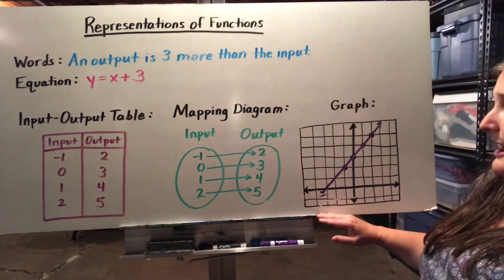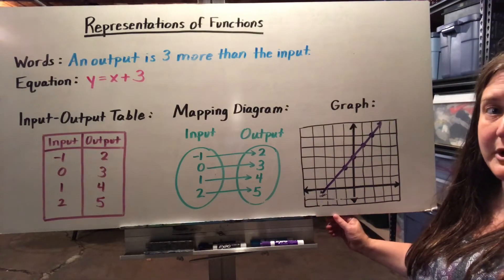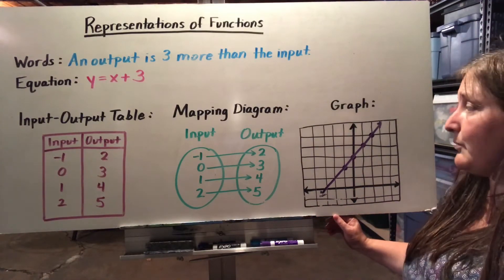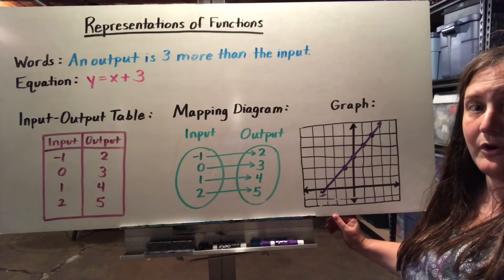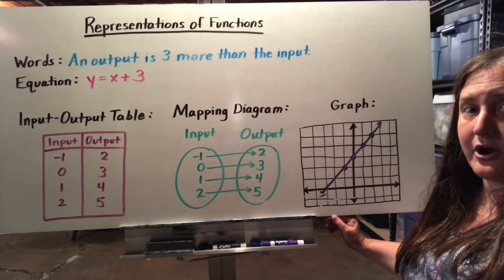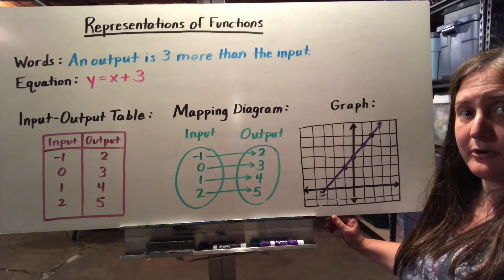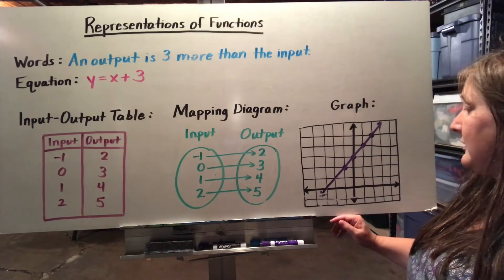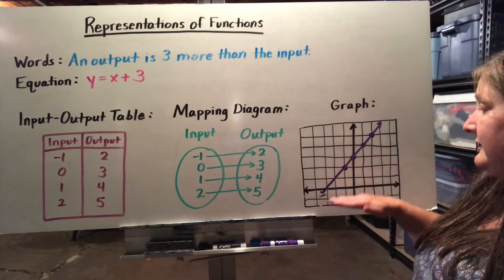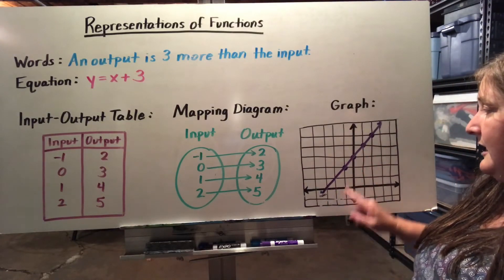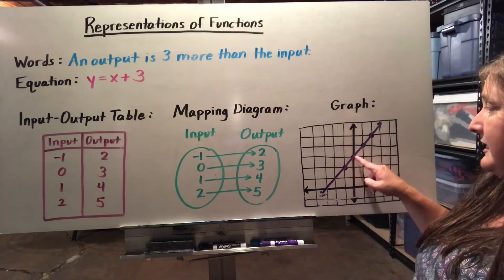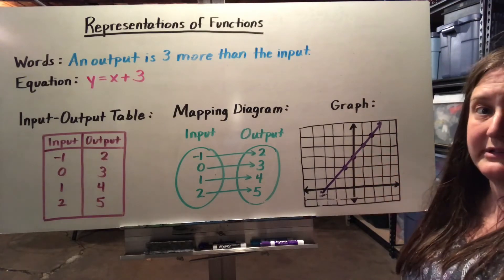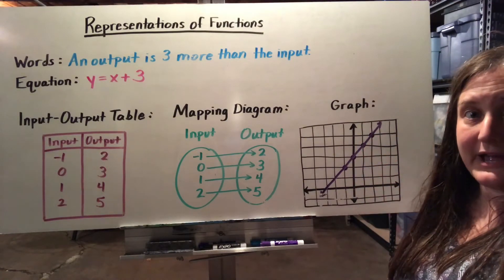A graph takes our input-output pairs, writes them as coordinates — the input is the x coordinate and the output is the y coordinate — and we turn that into a single point that we can graph using the x and y axis. Then we can see a pattern with our input-output points and connect them.